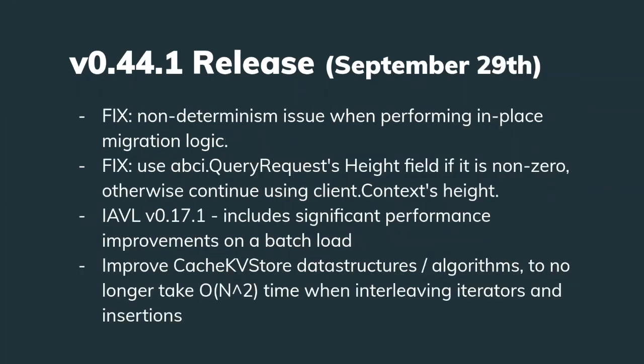The 4.4.1 release did go out today. It fixes a non-determinism issue when performing in-place store migrations. It fixes an issue using ABCI query requests with the height field if it is non-zero, otherwise continuing to use client context height. It also includes IAVL v0.17.1 with significant performance improvements on batch load, and improves the cache KV store data structure algorithms to no longer take O(n²) time when interleaving iterators and insertions.